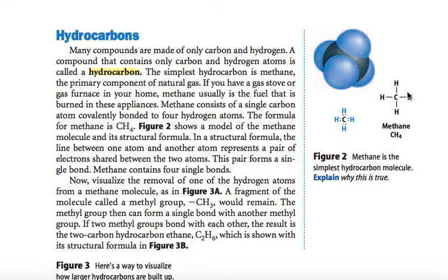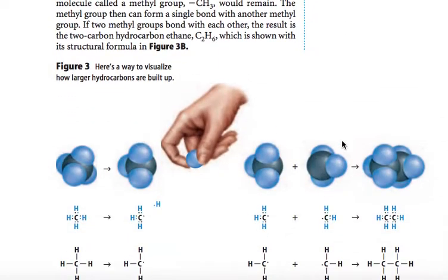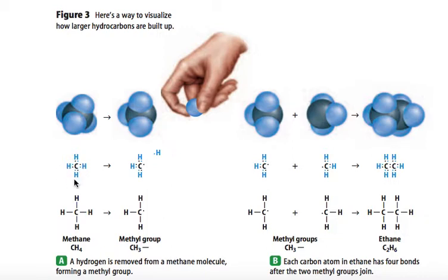Now visualize the removal of one hydrogen atom from a methane molecule. A fragment called a methyl group, CH3, would remain. The methyl group can then form a single bond with another methyl group. If two methyl groups bond with each other, the result is the 2-carbon hydrocarbon ethane, or C2H6, shown in its structural formula in Figure 3B. If you take CH4, remove one hydrogen, and attach two CH3 groups together, you get ethane, or C2H6.